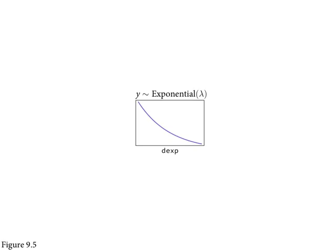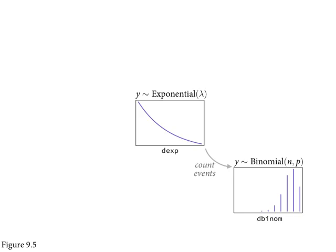If you count events emerging from an exponential distribution — say you've got a bunch of fruit flies and you're counting mortality events in some fixed window of observation, where those mortality events arise exponentially — it turns out the distribution of mortality events is binomial. You've got so many flies; each one could or could not ascend. You count them up and get a binomial distribution, which is the maximum entropy distribution for binary events with some constant expected value.